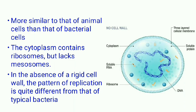Human diseases caused by mycoplasma include primary atypical pneumonia, non-gonococcal urethritis, stillbirth, spontaneous abortion, and infertility.